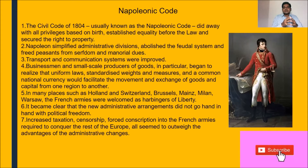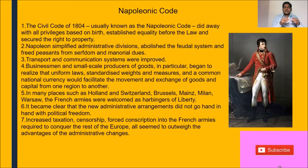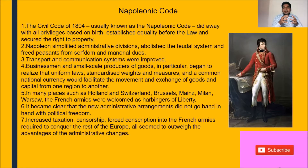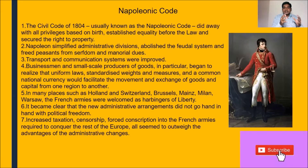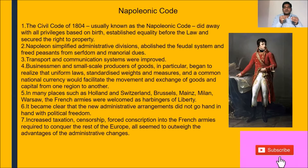He also abolished the feudal system and freed the peasants. According to the feudal system, the peasants had to pay a certain amount of their produce to the feudal or manorial lords. Napoleon abolished that system completely and freed the peasants from any kind of bondage or slavery. He also slashed off all the manorial dues. This is the second important step mentioned in the Civil Code of 1804.